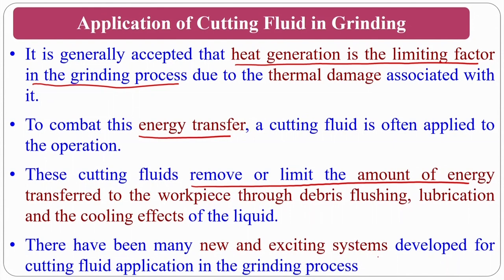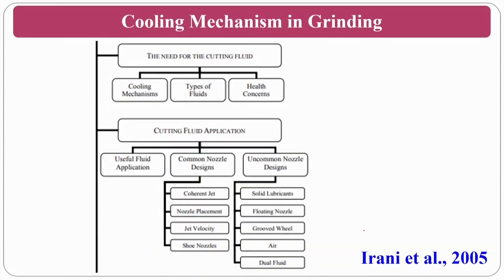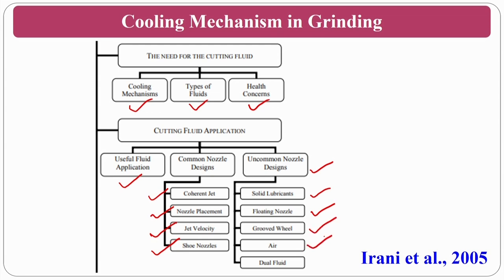Many new systems have been developed for cutting fluid application: solid lubricants, MQL, texturing of the grinding wheel, and many other techniques. The cooling mechanisms in grinding include types of fluid and health concerns. Common nozzle applications include coherent jets, nozzle placement, jet velocity, and shoe nozzles. Uncommon nozzle designs include solid lubricants, floating nozzles, grooved wheels, and even air as a cutting fluid. Dual fluid techniques can also be used — from one side you can send water-dominating fluid, and from the other side of the grinding wheel, oil-dominating cutting fluid.